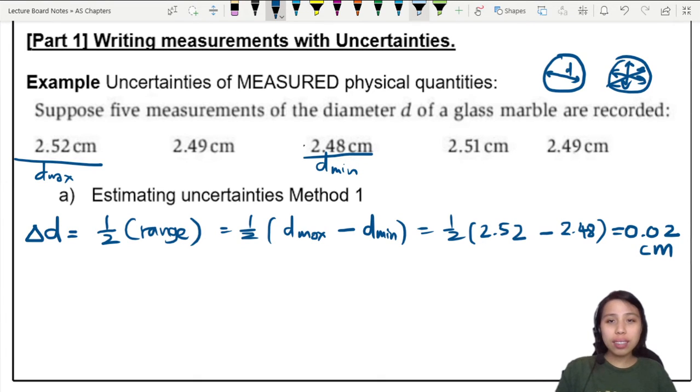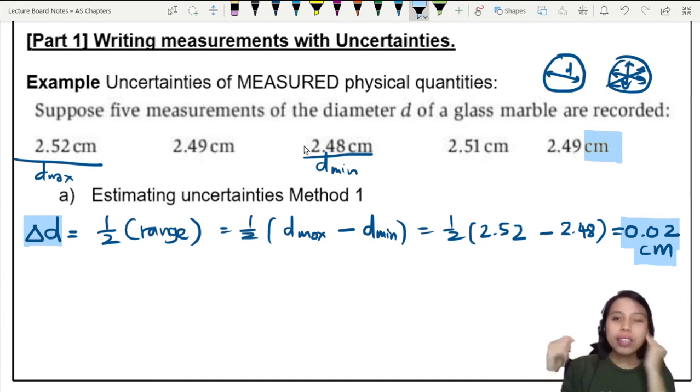That is our uncertainty, delta D. Note, this is the absolute uncertainty. How do I use absolute? Because my values are in cm, so my uncertainty is also in cm. But we're not done yet.